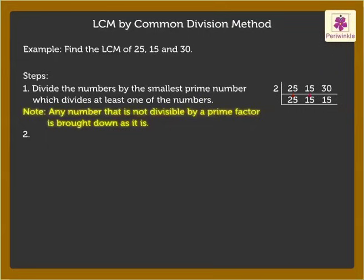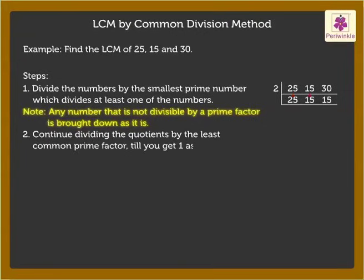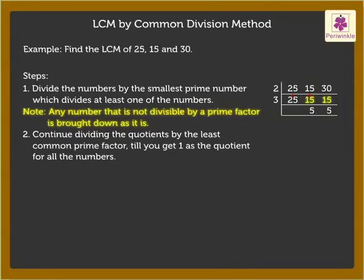Step 2: Continue dividing the quotients by the least common prime factor till you get 1 as the quotient for all the numbers. Now we take the next prime number, that is 3. 15 divided by 3 is equal to 5, so we write 5 below both the 15s. As number 25 is not divisible by 3, we bring it down as it is.